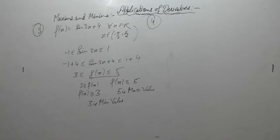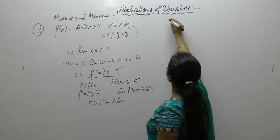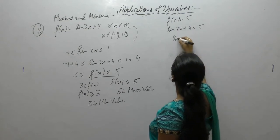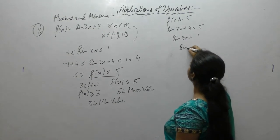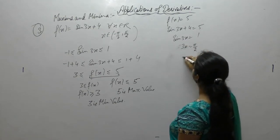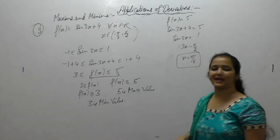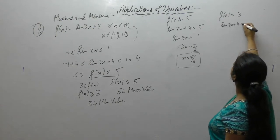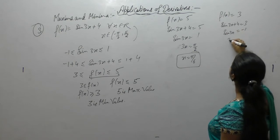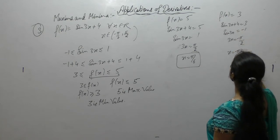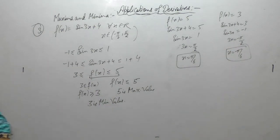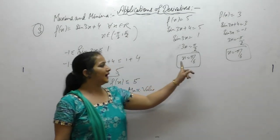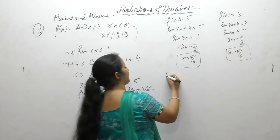Now we verify these values. For the maximum: f(x) equal to 5 gives sin(3x) equal to 1, which means 3x equal to pi by 2, so x equal to pi by 6. For the minimum: sin(3x) equal to minus 1 gives 3x equal to minus pi by 2, so x equal to minus pi by 6. Therefore, the minimum value is 3 at x equal to minus pi by 6, and the maximum value is 5 at x equal to pi by 6.